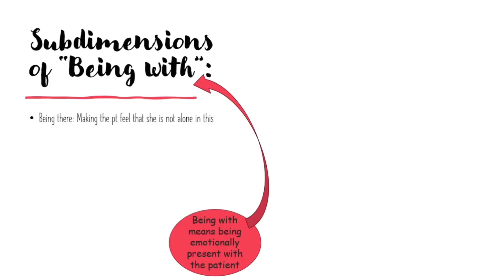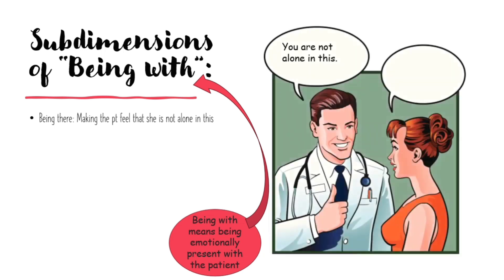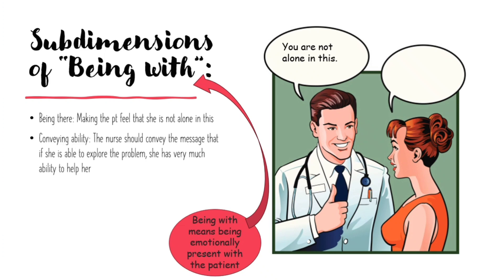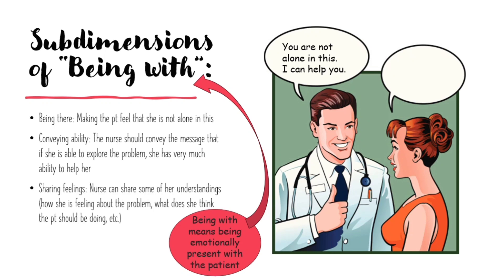Our next concept is Being With. Being With means being emotionally present with the patient. The first sub-dimension is Being There — making the patient feel that she is not alone, that we are there for her, and she should be made comfortable to share her side of the story. Next is Conveying Ability. This is where the nurse makes the patient understand that she is always available and conveys that if she is able to explore the problem, she has the ability to help. Next is Sharing Feelings. The nurse should share her feelings with the patient so that she doesn't feel alone.